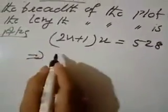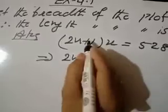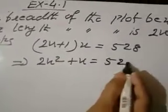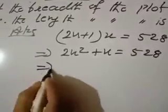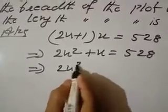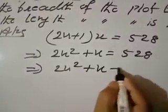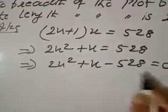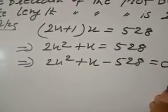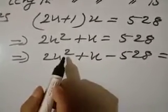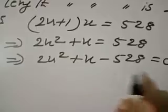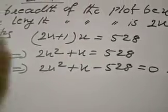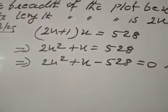Now, 2x times x gives 2x squared, and x times 1 gives x, so 2x squared plus x equals 528. Or, 2x squared plus x minus 528 equals 0. It is already in equation form and the highest power is 2, so the problem has been represented in the form of a quadratic equation.